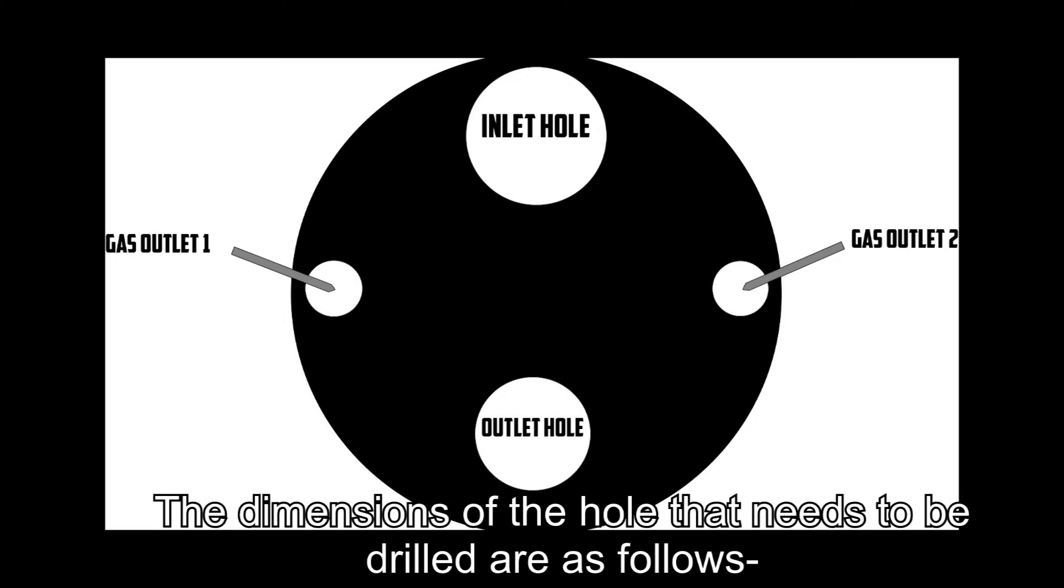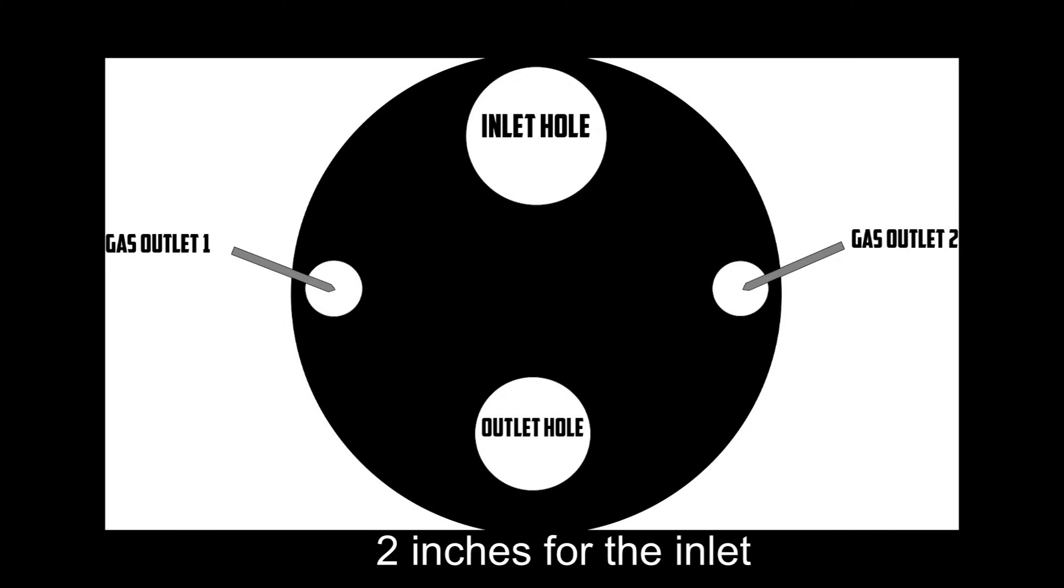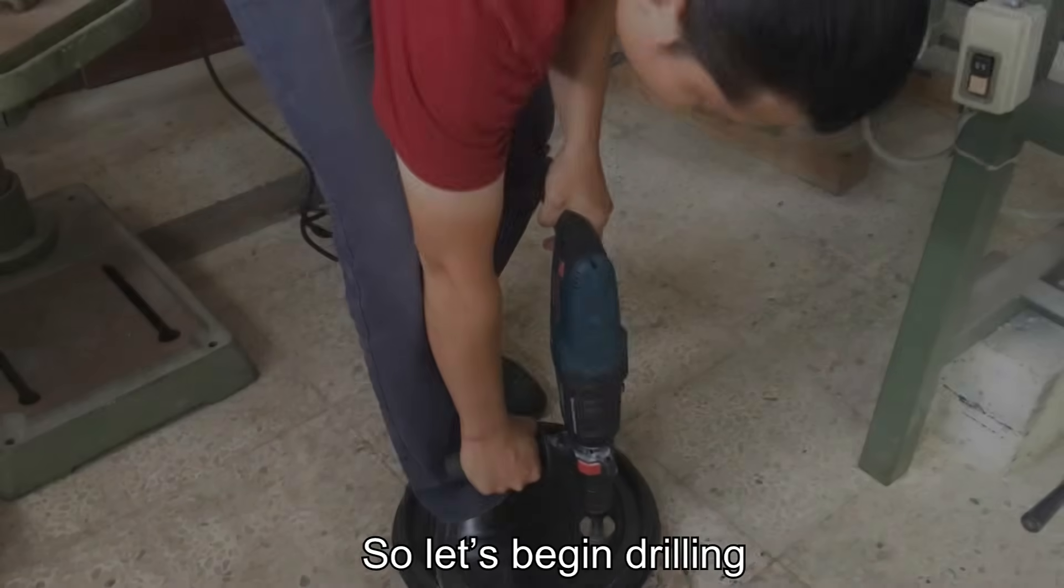The dimensions of the holes that need to be drilled are as follows: two inches for the inlet, 1.5 inches for the outlet, and 1.5 inches for the gas outlet holes. So let's begin drilling.